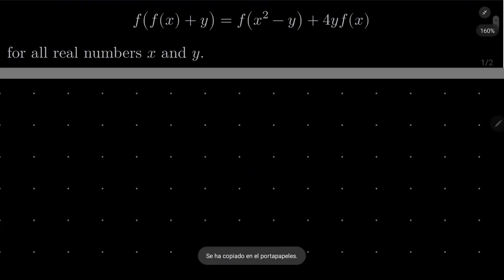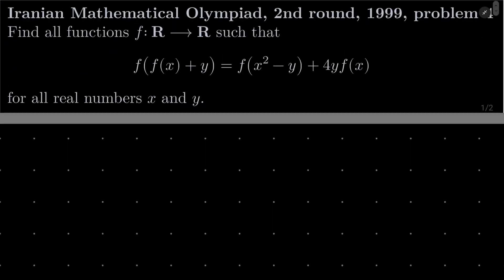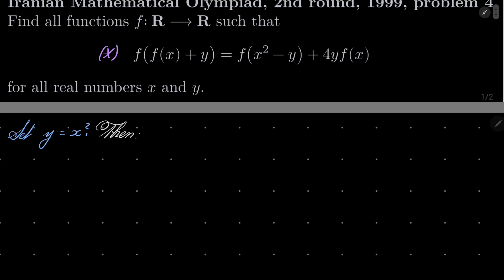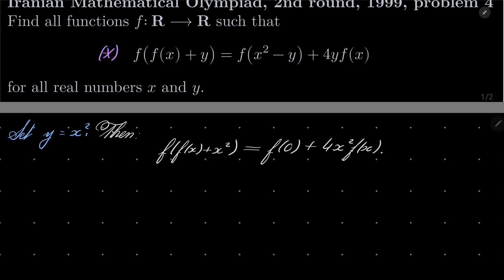Okay, so let's start by marking our equation with an asterisk. Let's start with setting y to be x squared. On the left-hand side we have f of f of x plus x squared, which equals f of x squared minus x squared, which is f of 0, plus 4 times x squared times f of x. Let's remember that.